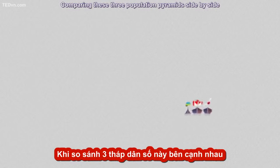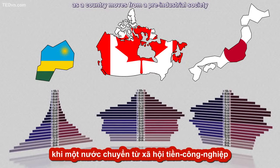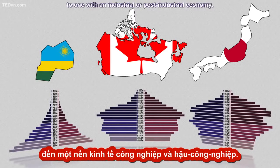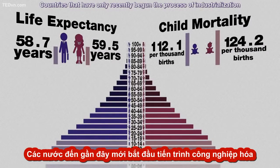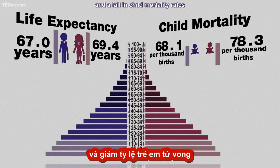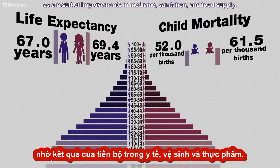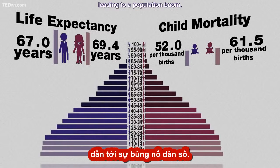Comparing these three population pyramids side by side shows us three different stages in the demographic transition as a country moves from a pre-industrial society to one with an industrial or post-industrial economy. Countries that have only recently begun the process of industrialization typically see an increase in life expectancy and a fall in child mortality rates as a result of improvements in medicine, sanitation, and food supply, while birth rates remain constant, leading to a population boom.